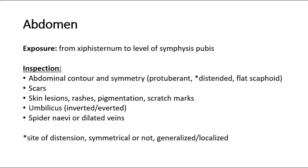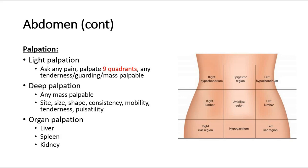Continue with palpation of the abdomen. Before palpating, ask the patient whether there is any pain. The examiner's position is also important — sit on a chair or kneel beside the bed at the right side of the child, making sure the examiner's hands are at the level of the child's abdomen. Ensure the hands are warm before palpating so as not to shock the patient, and palpate with a relaxed hand.